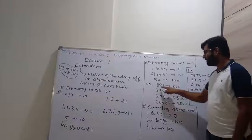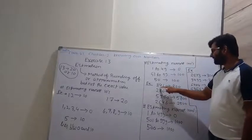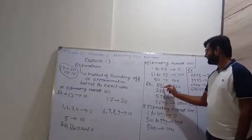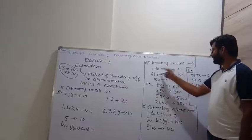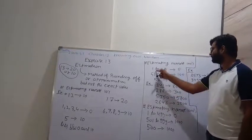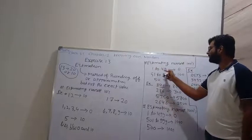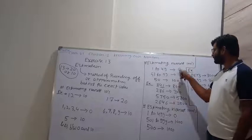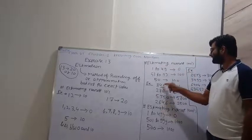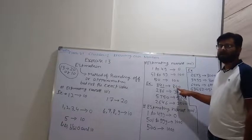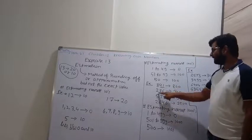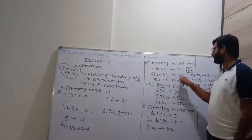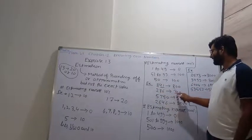For example, 841: here 41 lies between 1 and 49, so we convert it into 0. So 841 is converted into 800. And 286: here 86 lies between 51 to 99, so 286 is converted into 300.